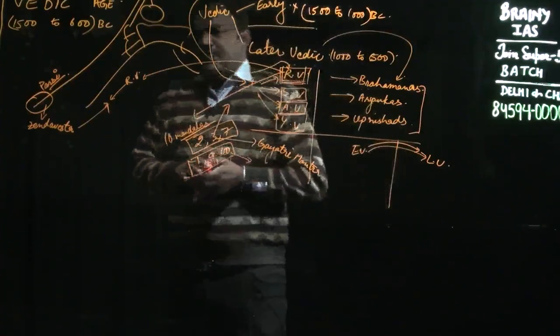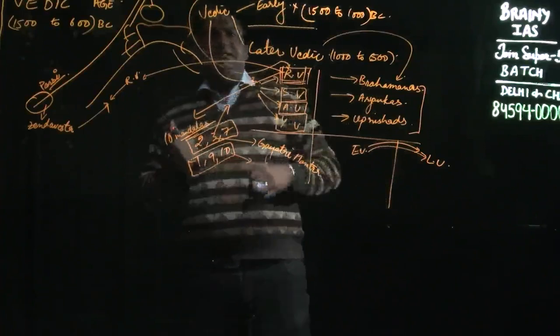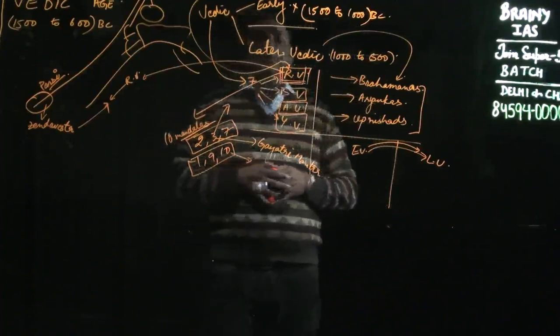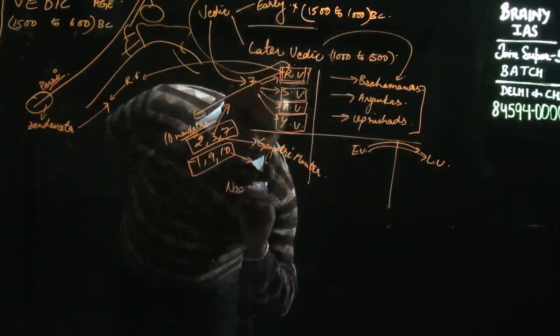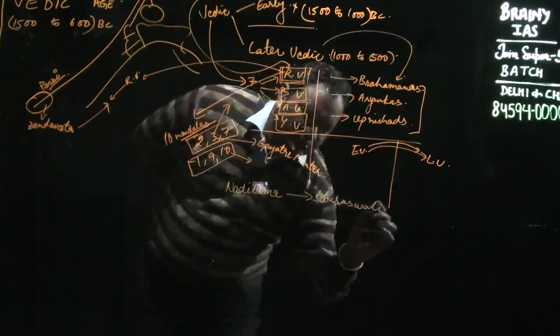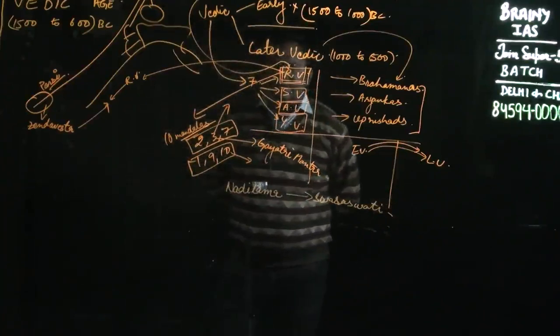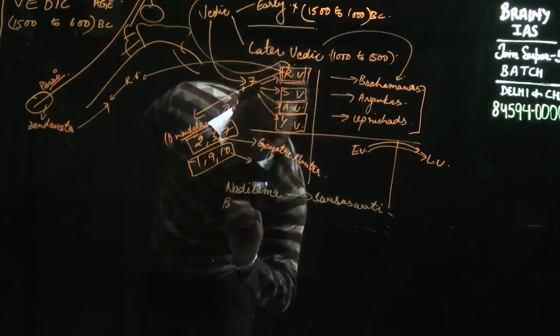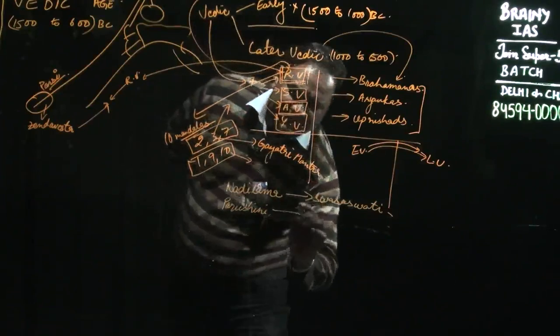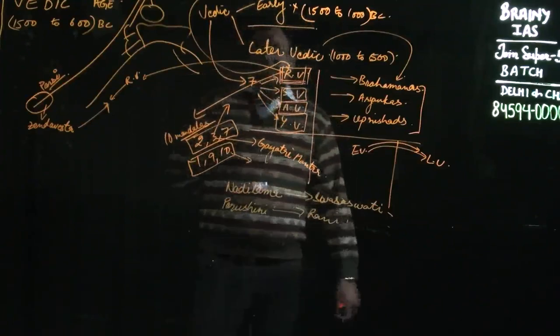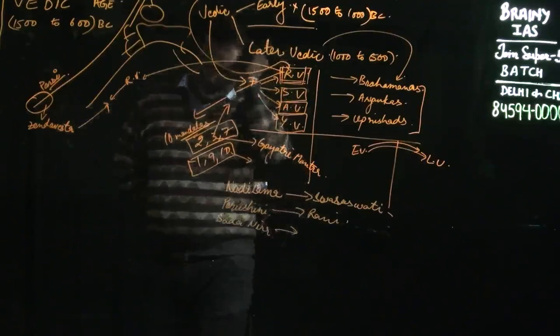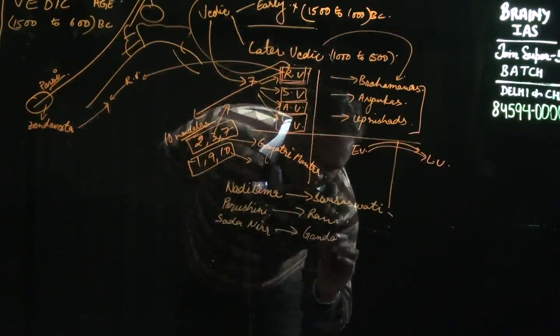Aryans also mentioned some rivers. They mentioned a river known as Naditama, which is Saraswati. Second river they mentioned was Parushini, which is Ravi. They also mentioned Sadhani, which is the Gandak.